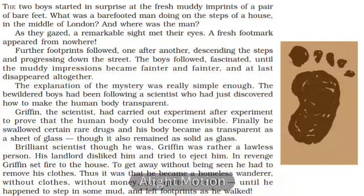They had been following a scientist who had discovered how to make the human body transparent or invisible. It was Griffin, the scientist who had been working for a long time on making the human body invisible. One day he consumed certain drugs which made his body invisible, though it could still be felt. Griffin was a lawless person. He had once burned down the house of his landlord who was trying to throw him out. Then he wanted to be invisible, so he had to remove his clothes and roam around without clothes and without money.